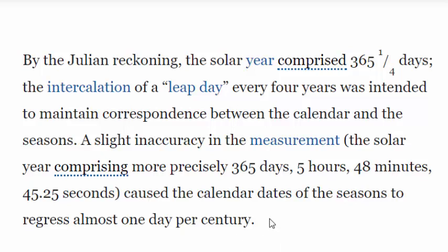This is what we're talking about when we say the seasons will be off if you go into the future without updating the calendar. The solar year more precisely comprises 365 days, 5 hours, 48 minutes, and 45.25 seconds. In other words, the Julian calendar, just like the Gregorian calendar, is off by about 11 or 12 minutes — and you can imagine that those 11 or 12 minutes will have an effect over time.